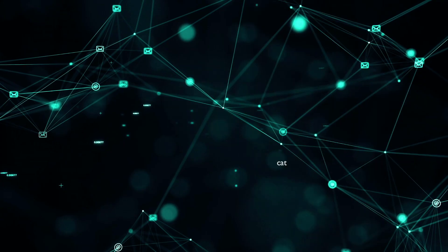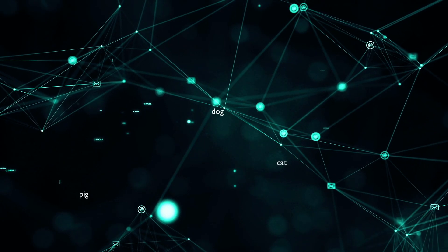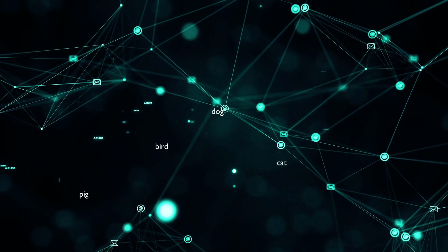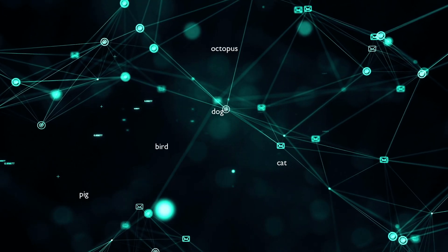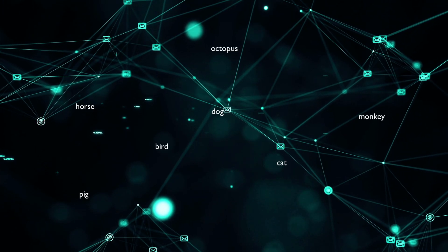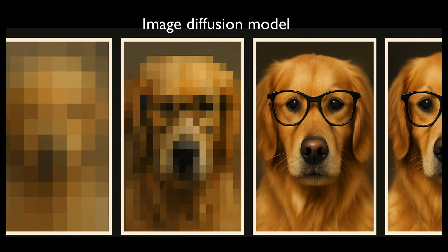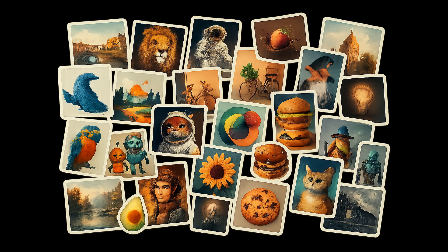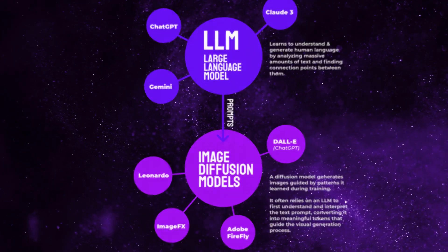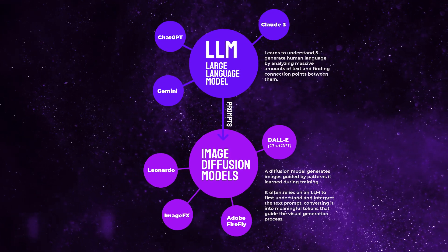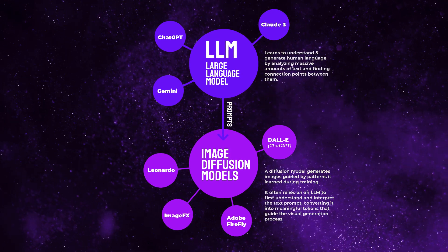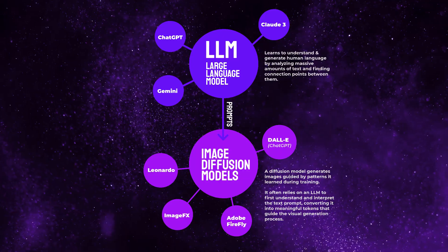The large language model learns, understands, and generates human language by analyzing massive amounts of text and finding connection points between them. It then feeds prompts into an image diffusion model, which generates images guided by patterns learned during training, often relying on an LLM to first interpret the text prompt and convert it into meaningful tokens that guide the visual generation process.